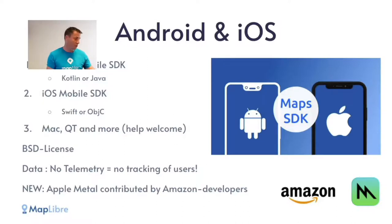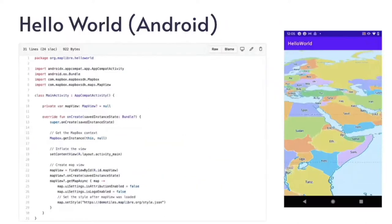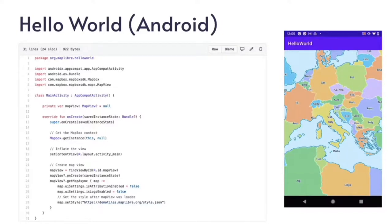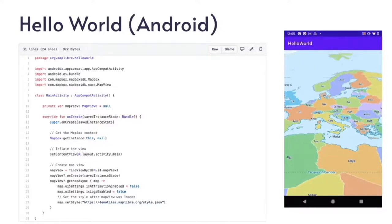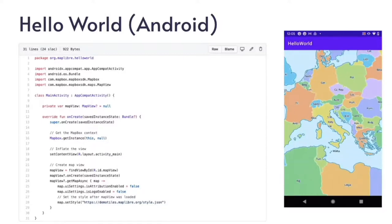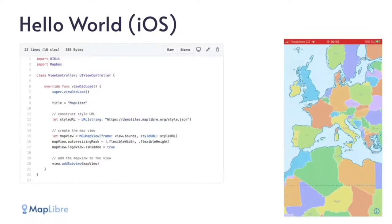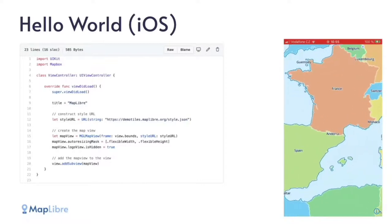Another huge improvement recently pushed into the native is a contribution from Amazon developers where they implemented rendering through the Apple Metal language. So the library is going to be supported in all future iOS devices and it will run on iPads and iPhones in upcoming versions. Writing the code is almost the same simplicity as in JavaScript — with about 30 lines of code you can develop your own native mobile application. This is an example on Android, and on iOS it's even shorter, so you can try it.